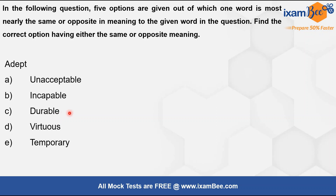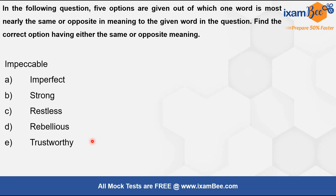Next word: 'impeccable,' which means perfect and flawless. 'Durable' means long-lasting. 'Virtuous' means righteous or ethically correct. 'Temporary' means short-lasting. 'Rebellious' means defiant or vidrohi. 'Imperfect' is the direct opposite of impeccable — impeccable is perfect and flawless, imperfect is the opposite. So the only word related to impeccable is imperfect as its antonym, and that is the correct answer.